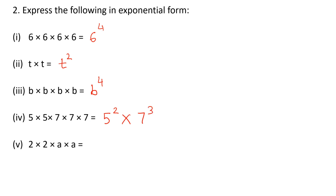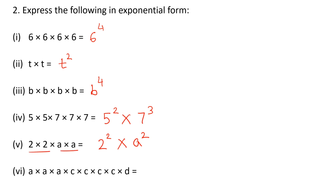2 times 2 times A times A: so 2 is multiplied 2 times and A is also multiplied 2 times, giving 2 raised to the power of 2 times A raised to the power of 2. And A is multiplied 3 times, so A raised to the power of 3. C is multiplied 4 times, so C raised to the power of 4. And D appears just once, so D to the power of 1.